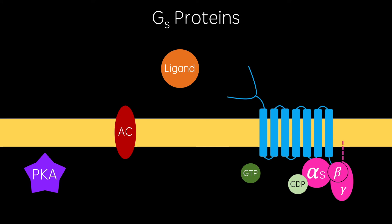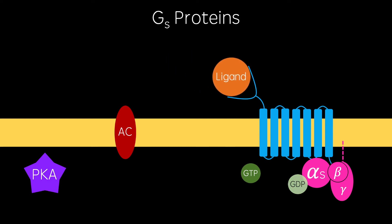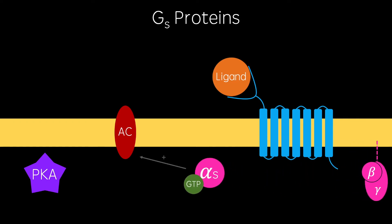GPCRs can also be subdivided by the form of G protein to which they are attached. GS coupled receptors activate adenylyl cyclase. This enzyme converts ATP to cyclic AMP. This cyclic AMP activates protein kinase A, which goes on to activate a variety of intracellular signaling cascades.